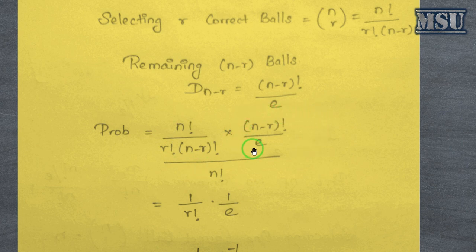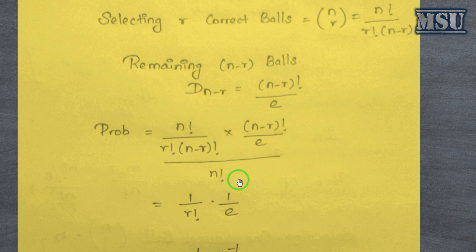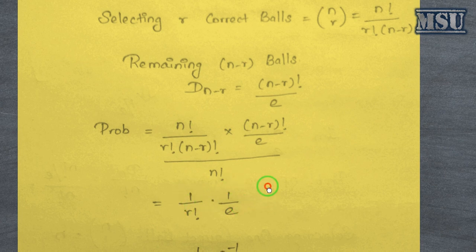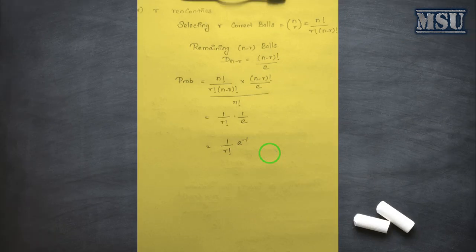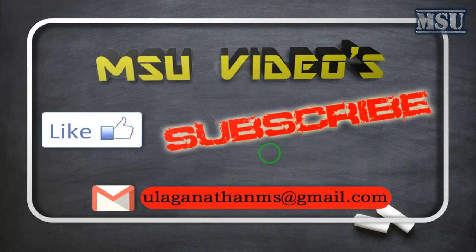The probability of exactly r rencontres is: nCr × (n−r)!/e divided by n!. The (n−r)! cancels and the n! cancels, giving a final probability of 1 / (r! × e), which can be written as e^(−1) / r!.